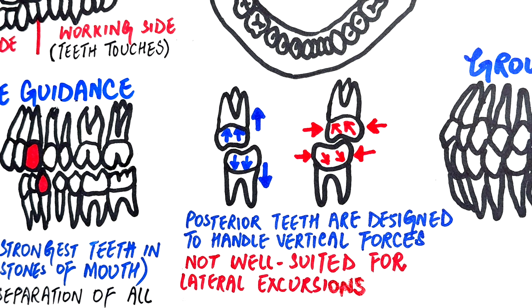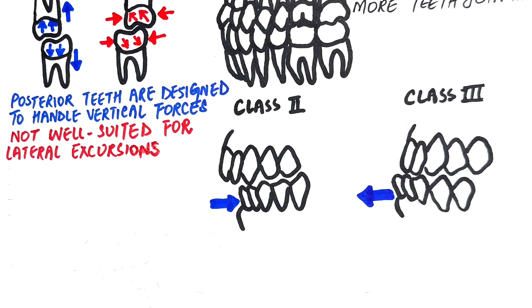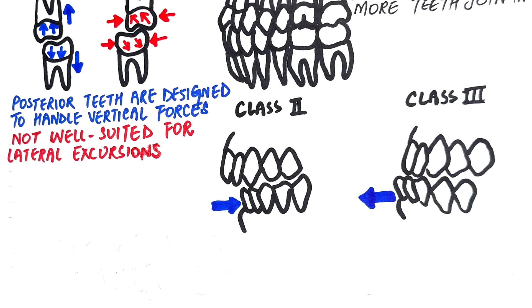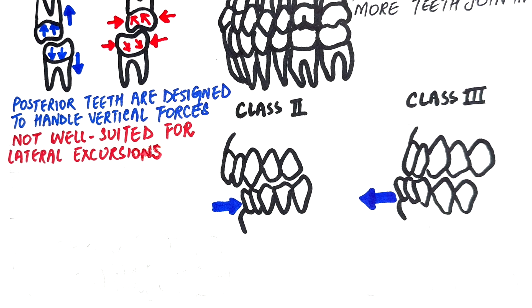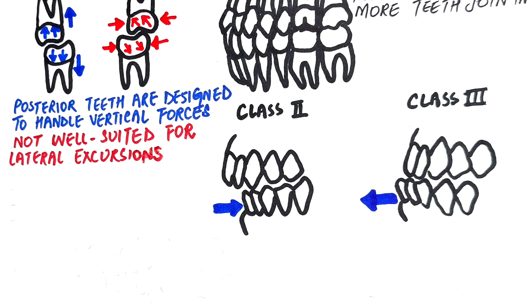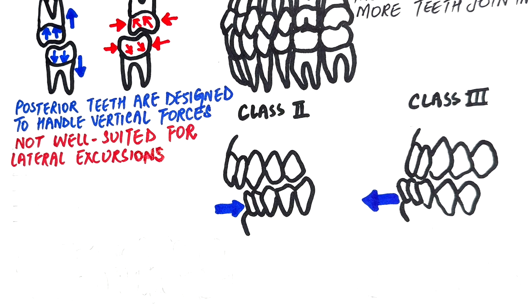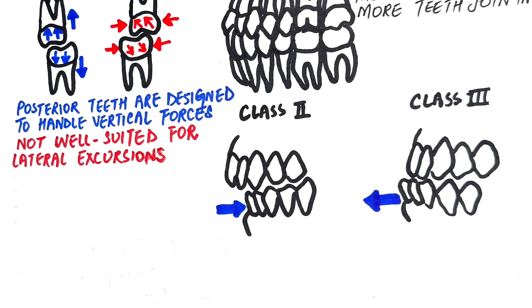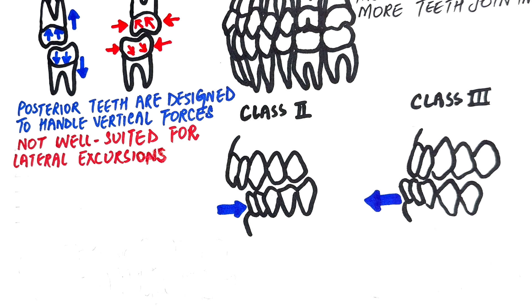However, in some cases — like Class 2 or Class 3 malocclusions where the canines are either too far forward or too far backward — they do not contact during lateral movements. In these situations, we entirely rely on group function.